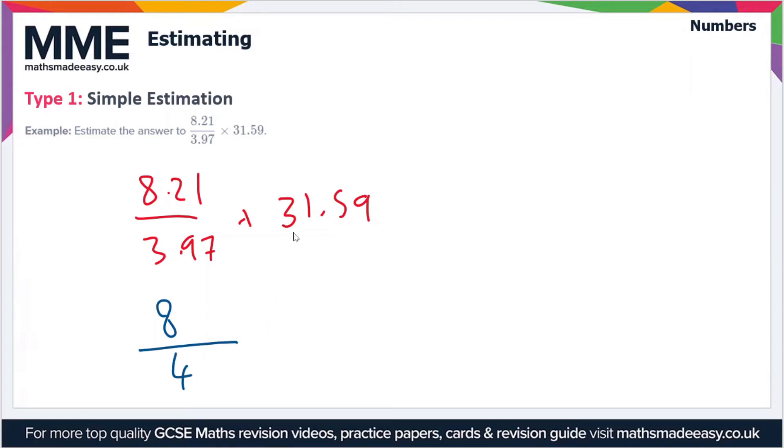And then 31.59 is going to be 30. So we've got 8 over 4 times 30. 8 over 4 is obviously equal to 2, so we've got 2 times 30.